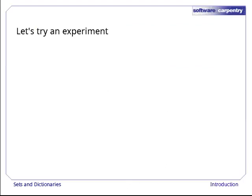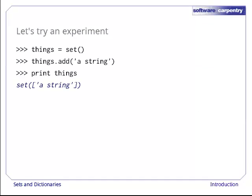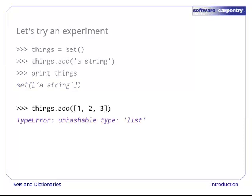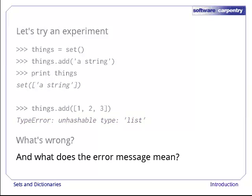Let's start by trying an experiment. Create a set, add a string to it, and print the set. As expected, the string is in the set. Now let's try adding a list to the same set. Whoops, why doesn't that work? And what does that word, unhashable, mean?